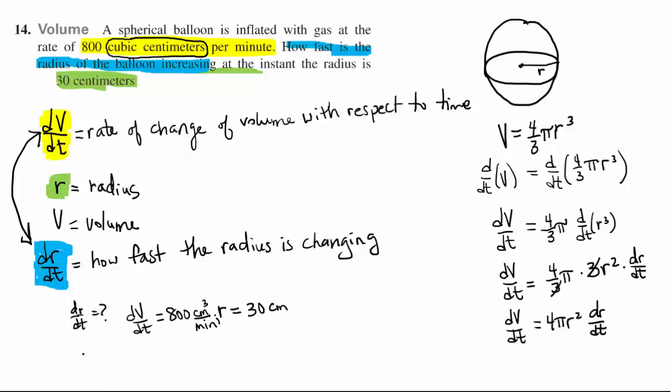So let's plug in: we have 800 for our dV/dt equals 4π times r squared, so 30 squared, times dr/dt which is what we're looking for. So dr/dt is going to equal 800 over 4π times 900, and so that's going to be 2 over 9π. And what do you think the units are? Centimeters per minute.